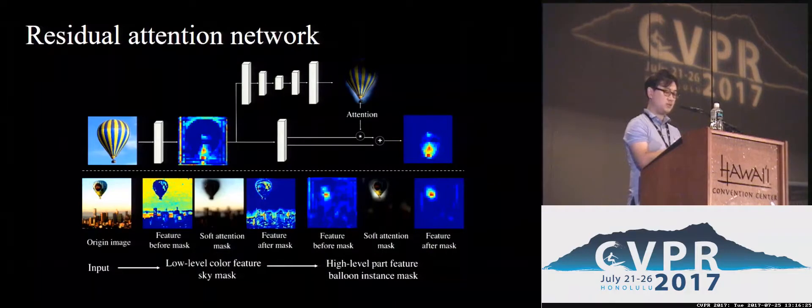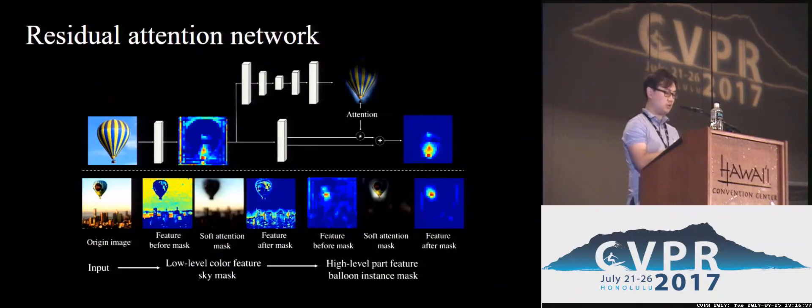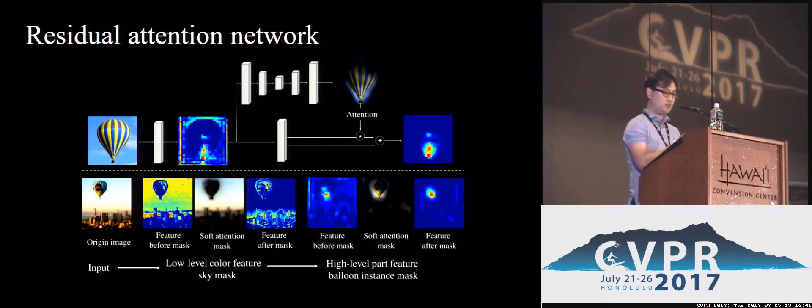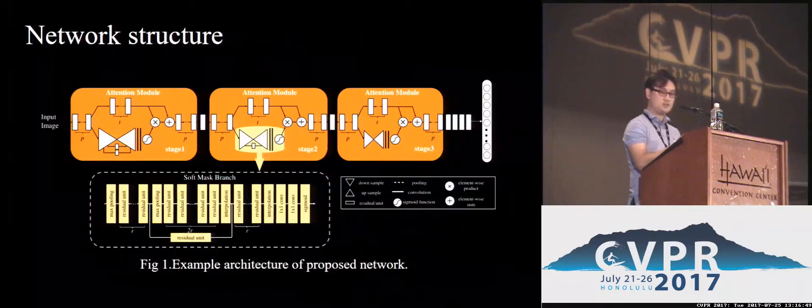Our Residual Attention Network generates attention aware features by applying soft attention masks across different layers. One key observation is that different layers require different types of attention, similar to the mixed nature of human attention. For example, in bottom layers, low-level color masks pay attention to non-blue colors, while in top layers, high-level instance masks pay attention to the instance of balloons.